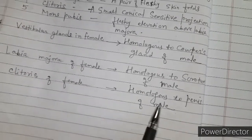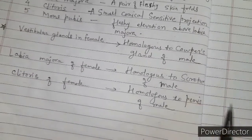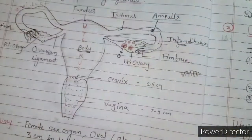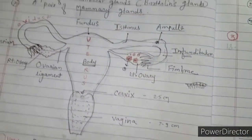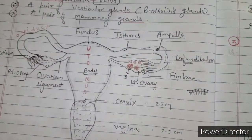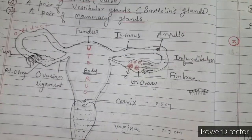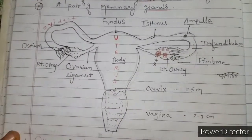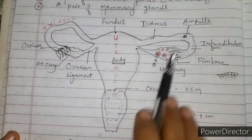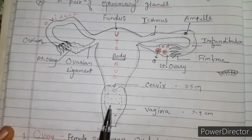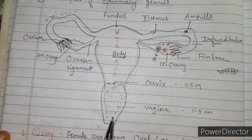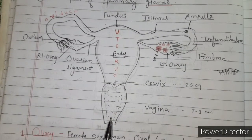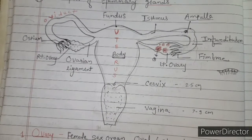So all this is about the female reproductive system. Study well and you can draw the diagram given in the textbook for practice. Goodbye.